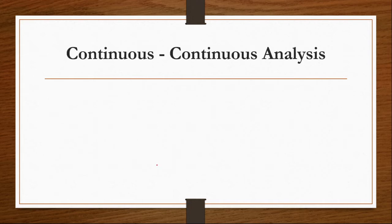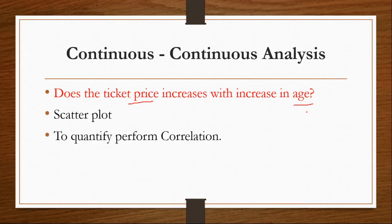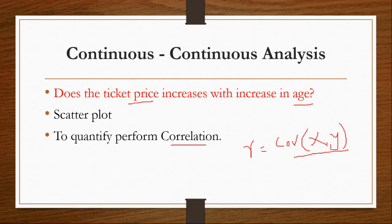For continuous-continuous analysis, if someone asks whether ticket price increases with increase in age, price is a continuous variable and age is also continuous. We can extract this information from the dataset and visualize it using a scatter plot. To check the correlation between these two variables we perform correlation using the formula: r = covariance(x, y) divided by the square root of variance(x) times variance(y), where the two variables are price and age.